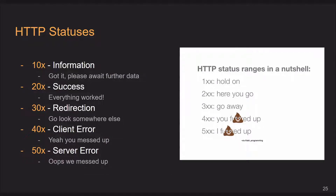HTTP statuses are also standardized. Anything in the 100 range is just informational. Everything in the 200 range means a successful, valid response — everything's good. 300 means redirection — that means this resource has been moved, and your browser often automatically handles redirects and you won't notice it. 400 means a client error — you did something wrong; 404 means you entered a wrong URL. 500 means the server is messed up — usually the backend devs need to go dig in and figure it out.